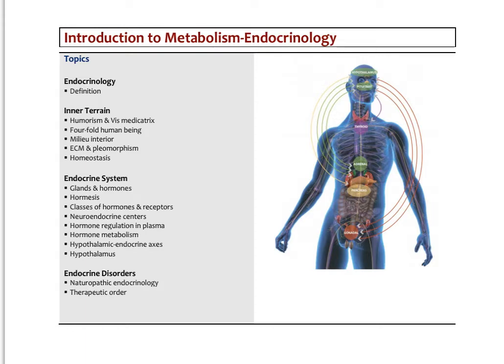Here we're going to look at just the general definition of endocrinology, and what I'm calling the inner terrain — how the endocrine system is one of the main regulators of our inner environment. In the next part we'll look at glands and different types of hormones, hormone receptors, how hormones are transported and metabolized, the hypothalamus, endocrine disorders, naturopathic versus conventional endocrinology, and how to apply the concept of the therapeutic order in understanding endocrine conditions.